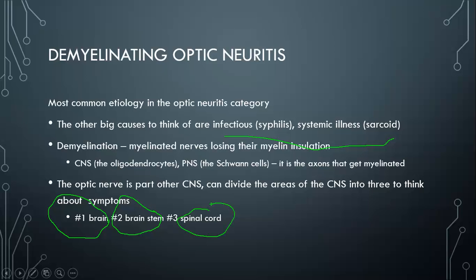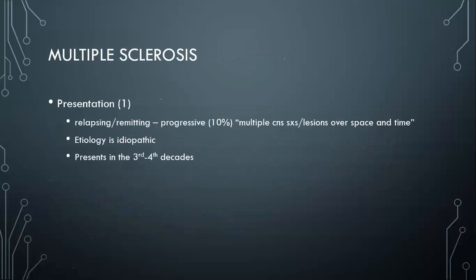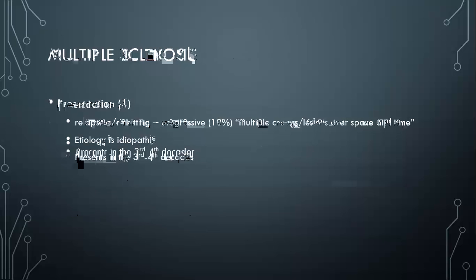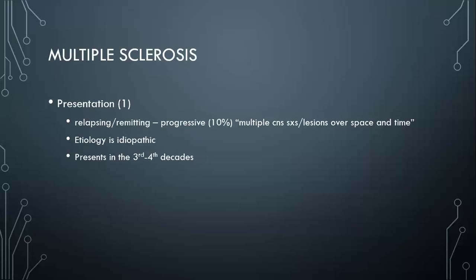The way multiple sclerosis can present is typically a relapsing, remitting course of multiple CNS lesions separated by space and time — that's the tagline to remember. Some people also present with a more progressive course that just gets worse over time. The etiology is idiopathic demyelinating disease of the white matter, meaning axons are getting demyelinated. It's also a disease of young people with a lot of morbidity associated with it.